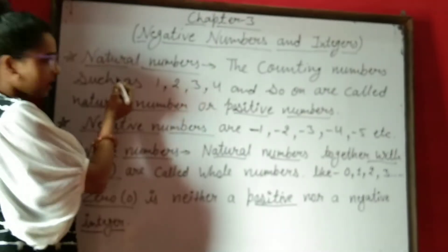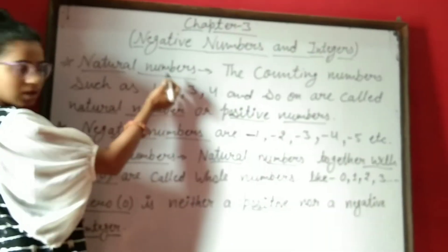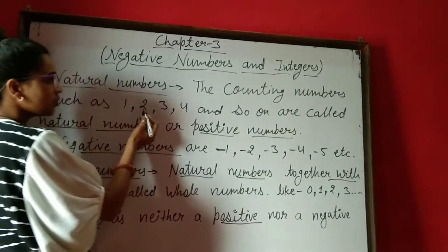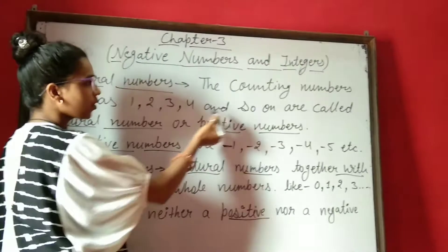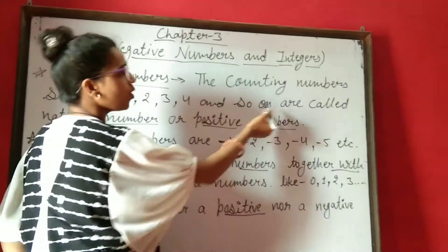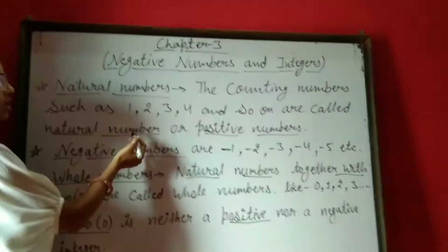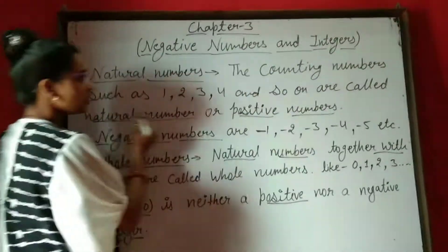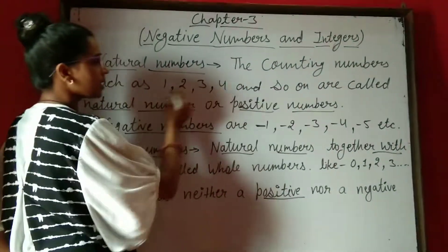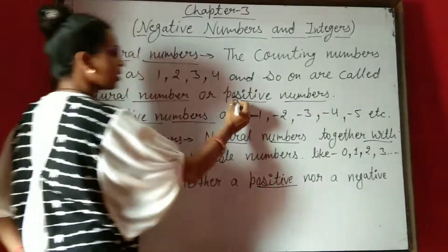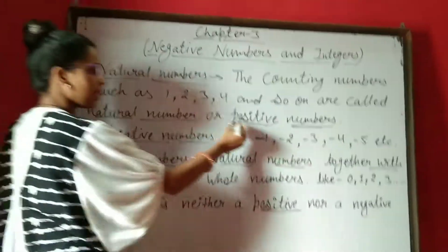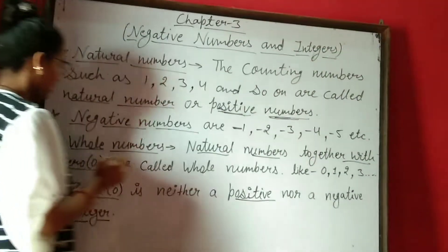First topic is natural numbers. The counting numbers such as 1, 2, 3, 4 and so on are called natural numbers or positive numbers. Means जो आपकी numbers की counting होती हैं उन्हें हम positive numbers भी बोल सकते हैं — वो हमारे positive numbers होते हैं.